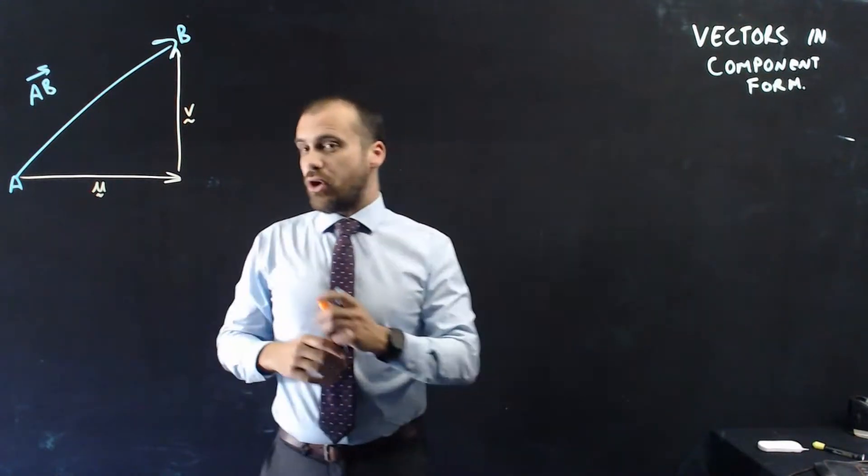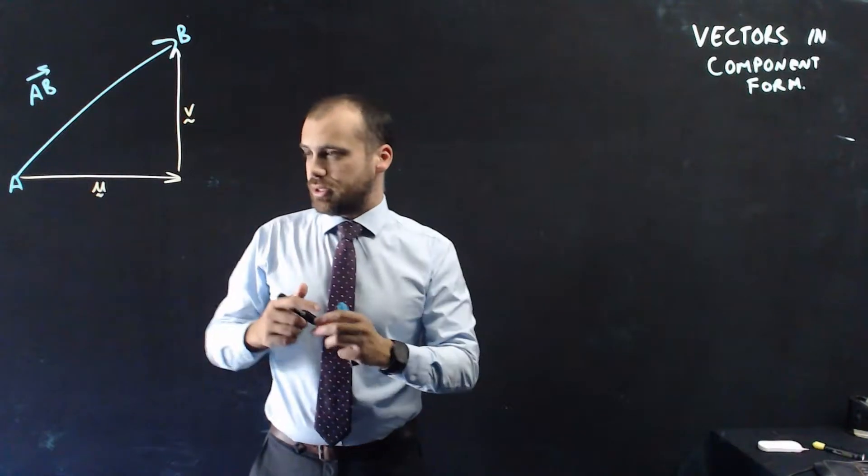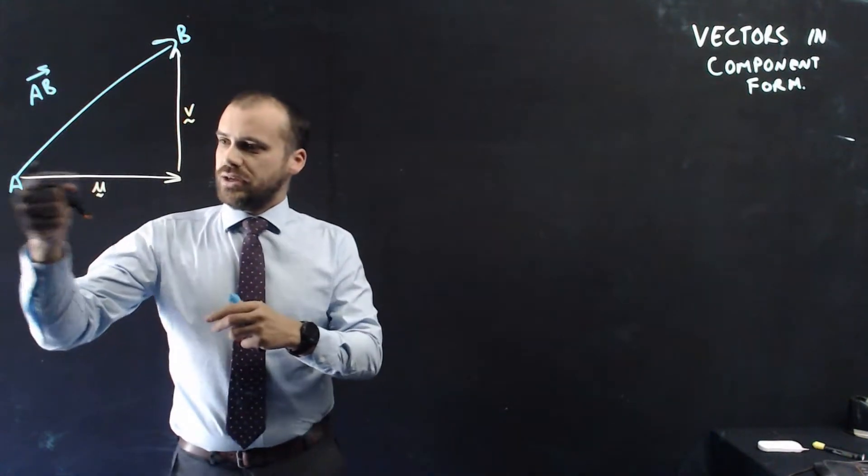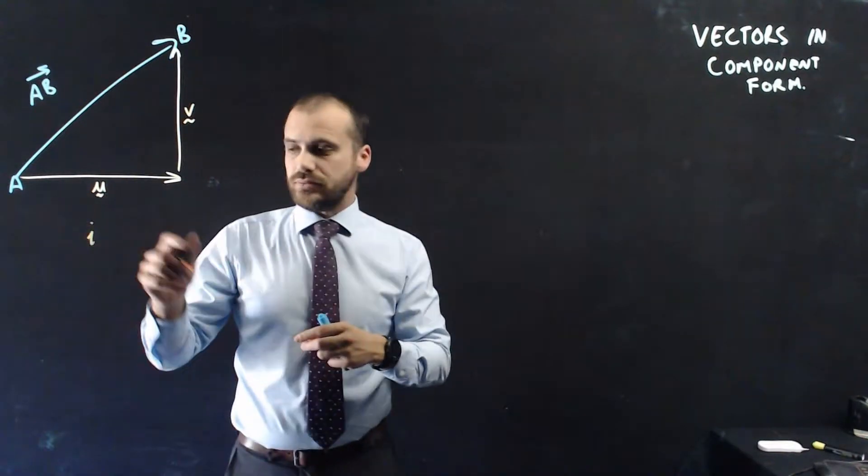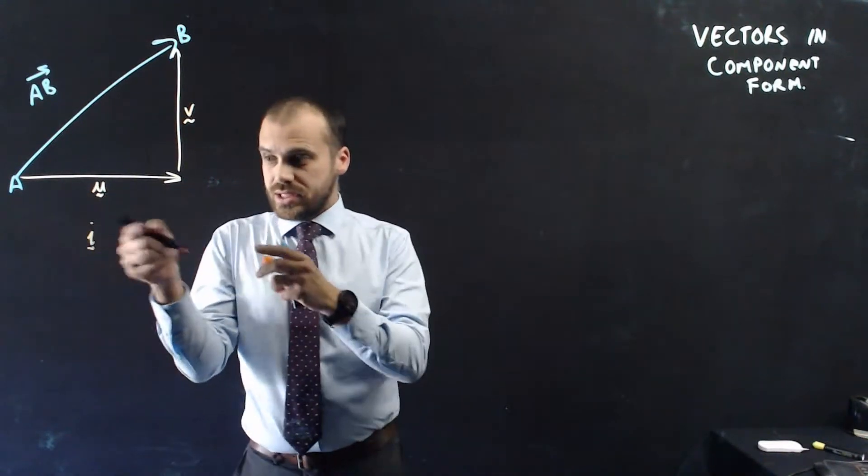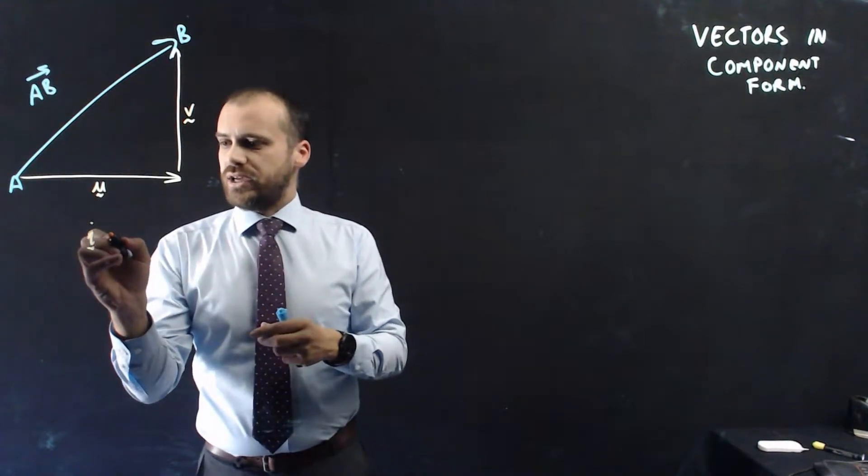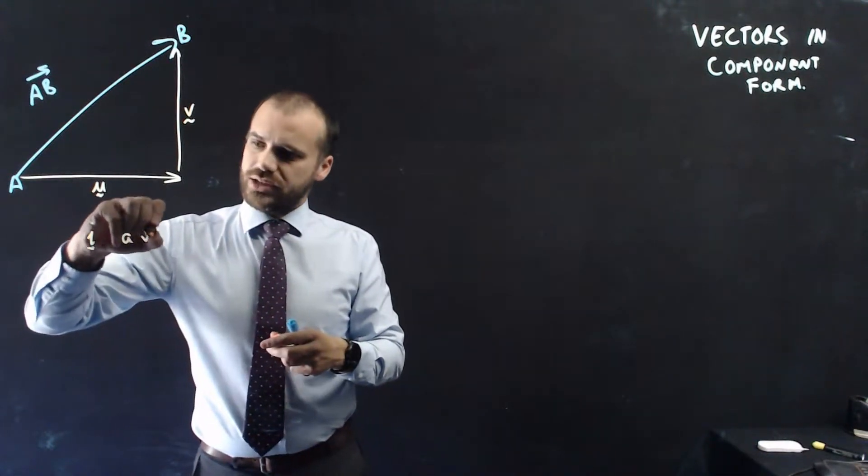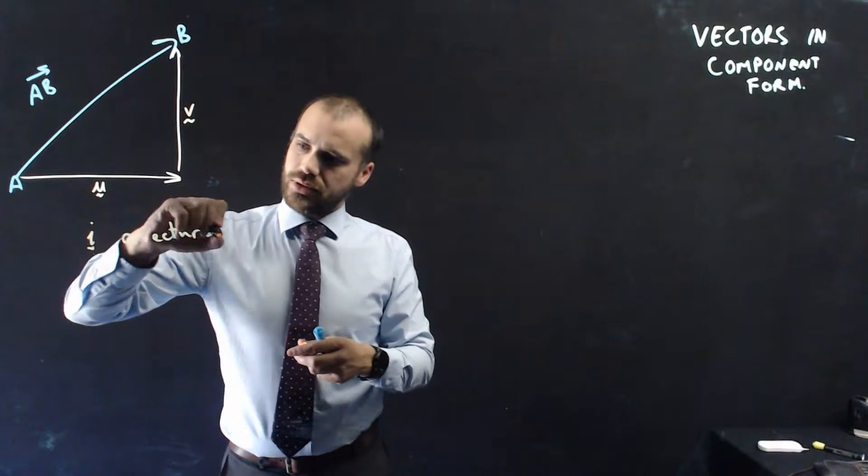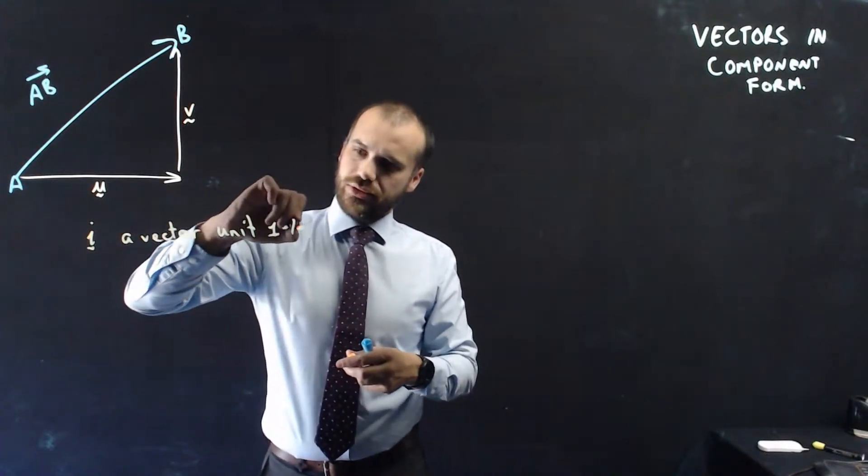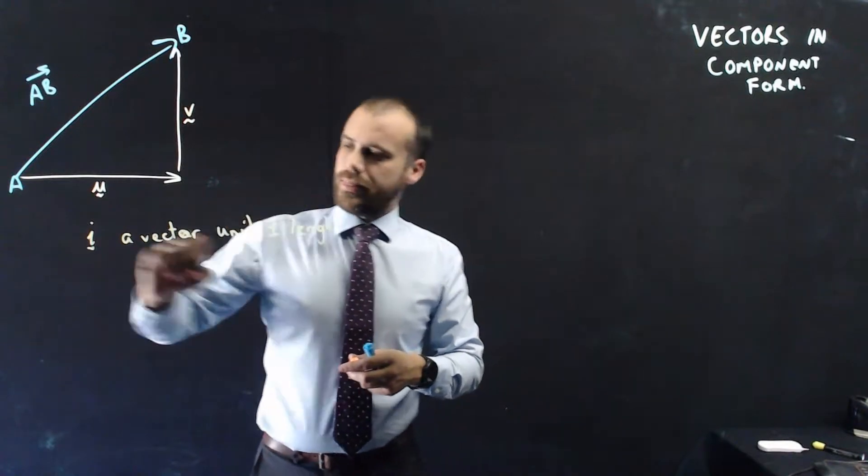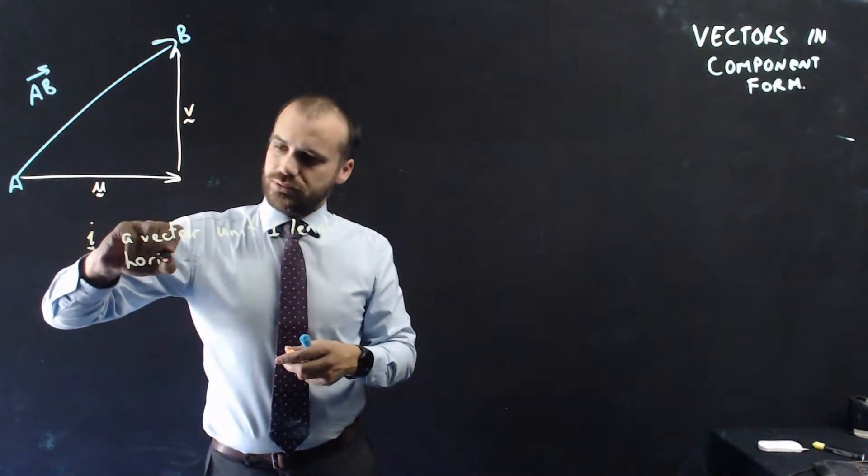Now, what we're going to do is create a single vector of length 1. So I'll call that vector, in the horizontal direction, I. So what is this vector? It is a vector, I is a vector, vector unit 1 length, horizontal direction.